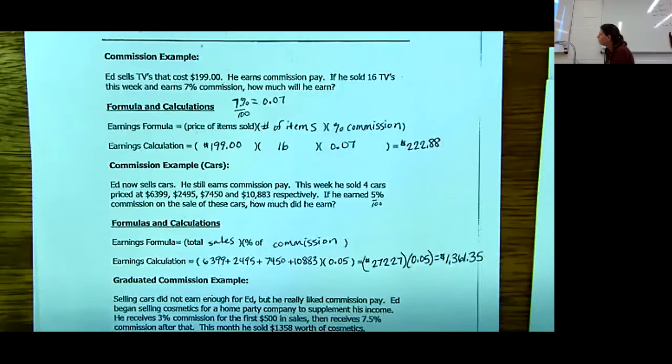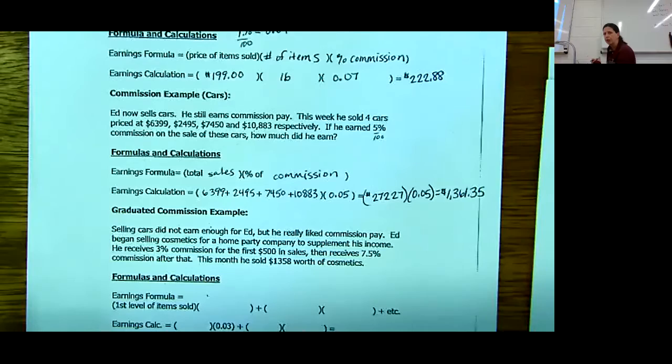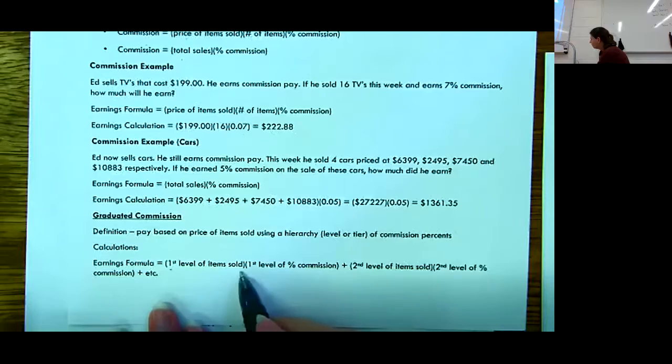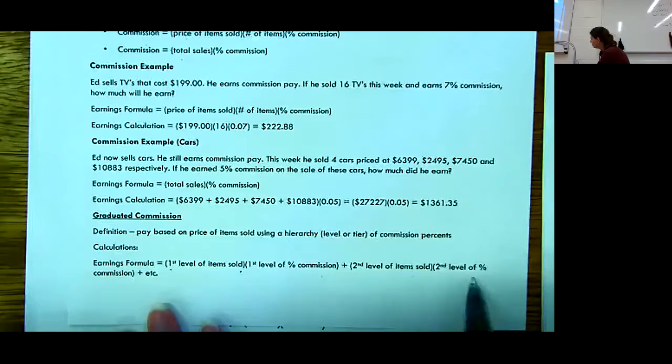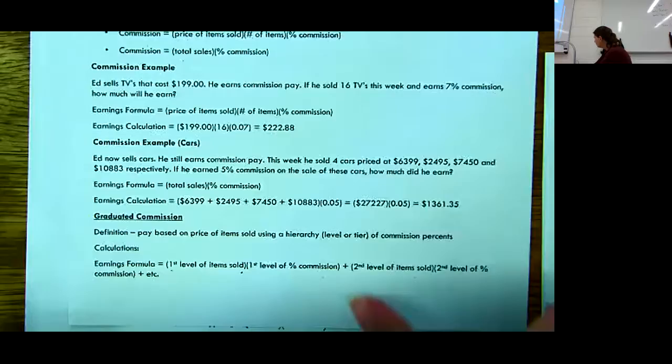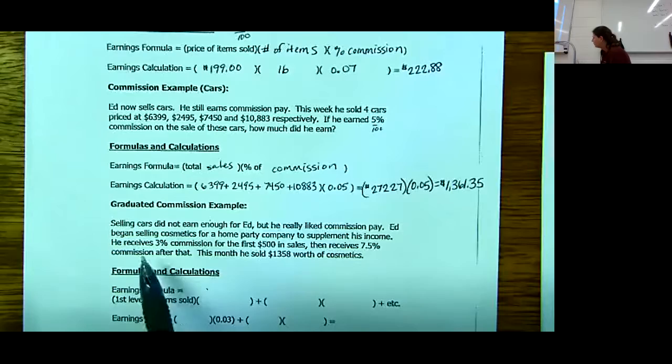Graduated commission is very similar to this, except you get paid a different level for each amount that you sell. You're going to have the first level of items sold times that percent commission plus the second level item sold times of commission. Most of them have two, I've seen some up to 10. Graduated commission is an incentive to sell more. The higher you sell, the higher percentage you get for each of those.